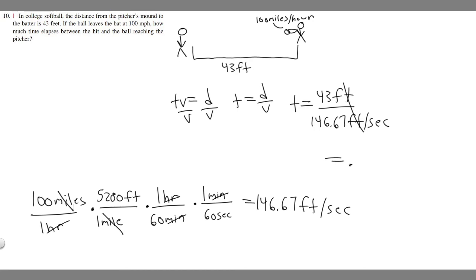So if you do 43 divided by 146.67, you're going to get that T equals 0.293, and then keep in mind our units, which is seconds. I'm going to round to the hundredth place here, so it's just going to be 0.29 seconds. So this is going to be your answer. How much time elapses? It's going to be 0.29 seconds.